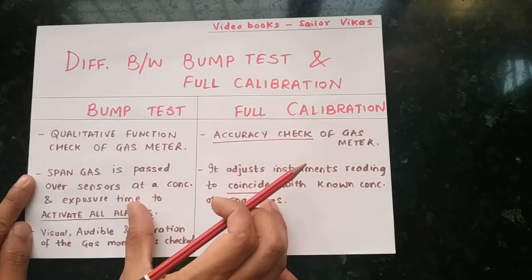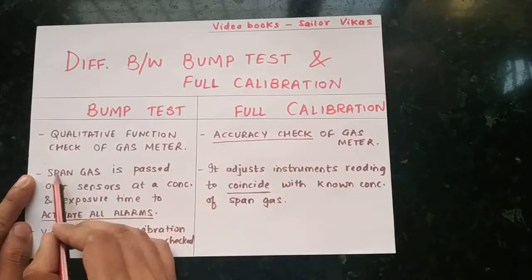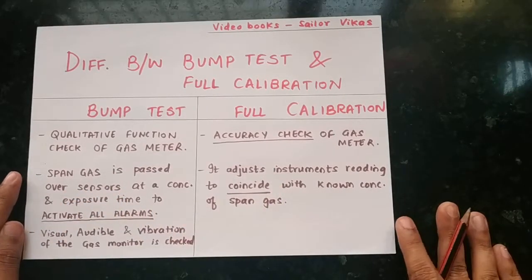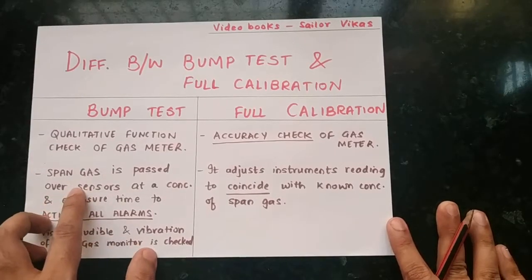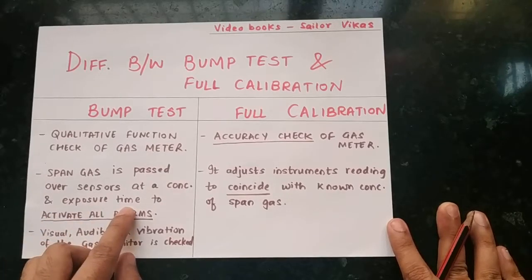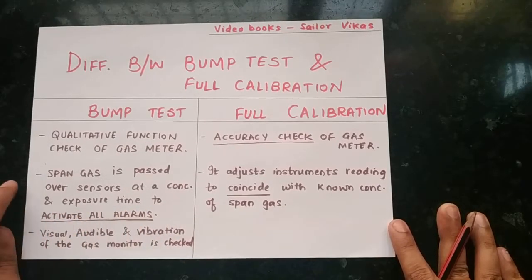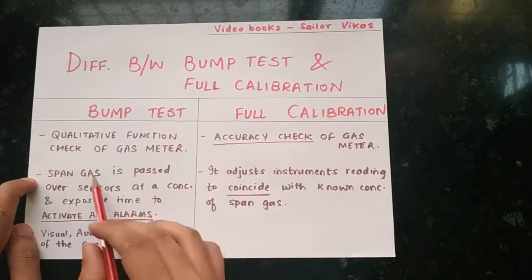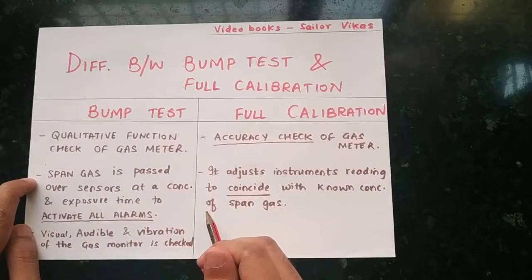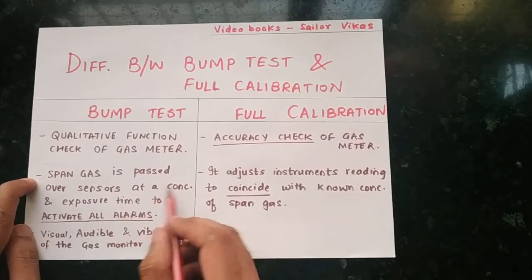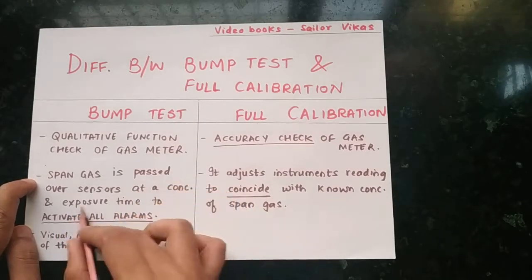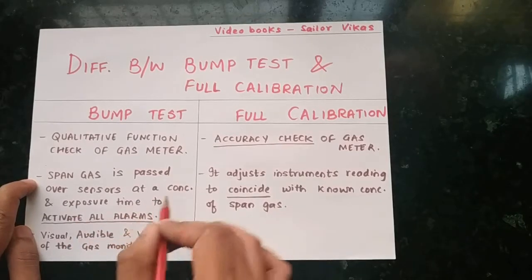In both cases, span gas is passed — here also span gas, and here also span gas — but the only difference is that in bump test, span gas is passed over the sensors at a concentration and exposure time sufficient to activate all alarms. The span gas bottle on board has a particular concentration, and when we pass this gas at that concentration for a particular exposure time, it will activate all the alarms of the gas meter.